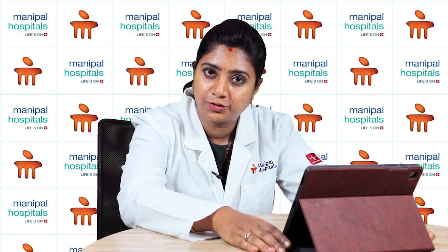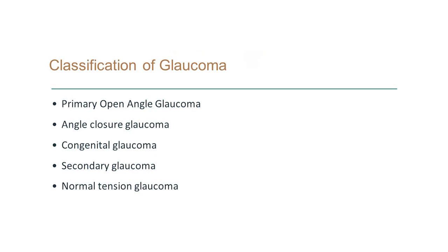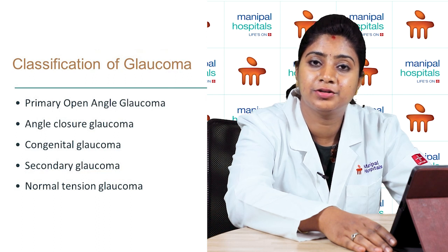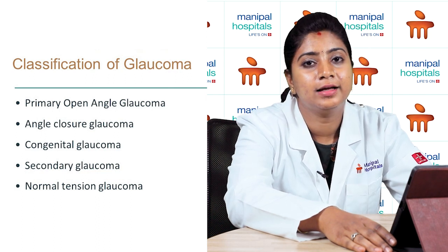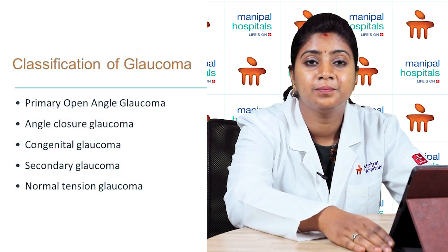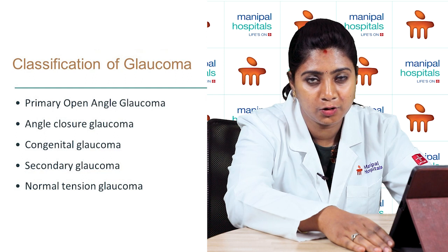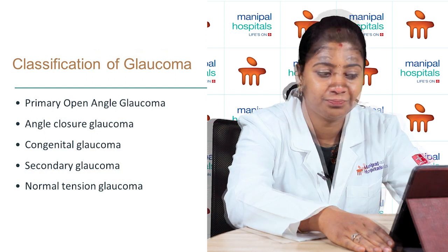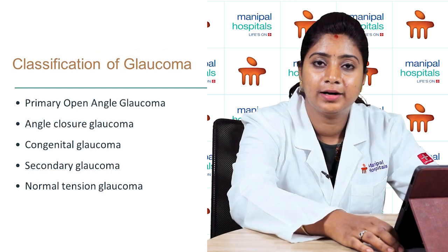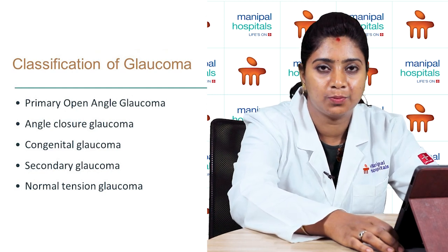There are various types of glaucoma: primary open angle glaucoma, closed angle glaucoma, congenital glaucoma, secondary glaucoma, and normal tension glaucoma. In primary open angle glaucoma, there is increased production whereas drainage is normal. In angle closure glaucoma, production is normal but drainage is reduced. Congenital glaucoma is present since birth. In normal tension glaucoma, eye pressures are normal yet there is damage to the optic nerve.